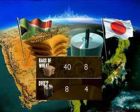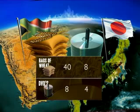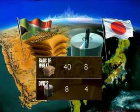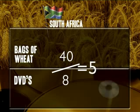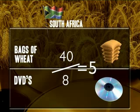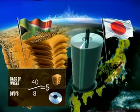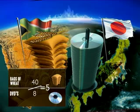Remember that each country must decide how to allocate its resources. In this simplified example, if South Africa concentrates all of its resources on DVD production, it can make 8 DVDs — but this means losing out on the wheat. And if they focus all their efforts on wheat production, they can produce 40 bags while sacrificing any DVD production. To help South Africa decide how to allocate resources, we calculate how much it costs to make one DVD. How much wheat does South Africa have to give up to make one DVD? Divide 40 by 8, which gives us five. So for each DVD produced, South Africa could have grown five bags of wheat — each DVD costs South Africa five bags of wheat.